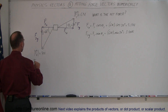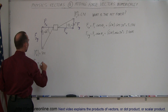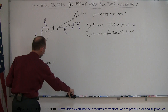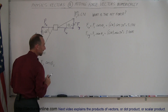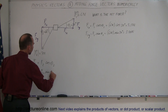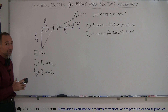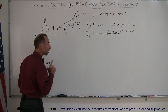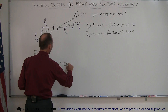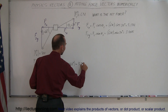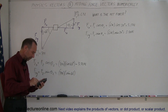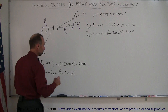Now I'll do the same for force 2. F2X is equal to F2 times the cosine of theta 2, because that's adjacent to the angle. F2Y is equal to F2 times the sine of theta 2. Notice I didn't put a negative sign there because I'm simply looking for the magnitude of the Y component, which is always a positive number regardless of the direction. So F2X equals 7 Newtons times the cosine of 60 degrees, which gives 3.50 Newtons. And F2Y equals 7 Newtons times the sine of 60 degrees, which gives 6.06 Newtons.